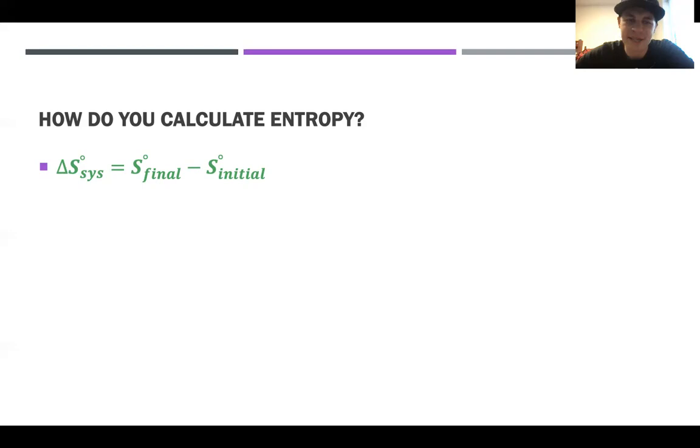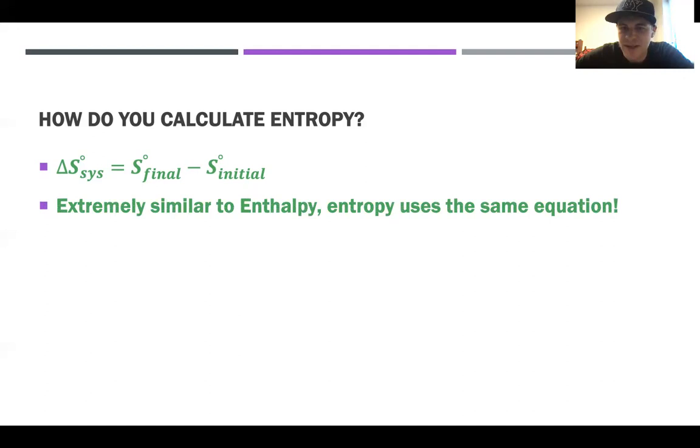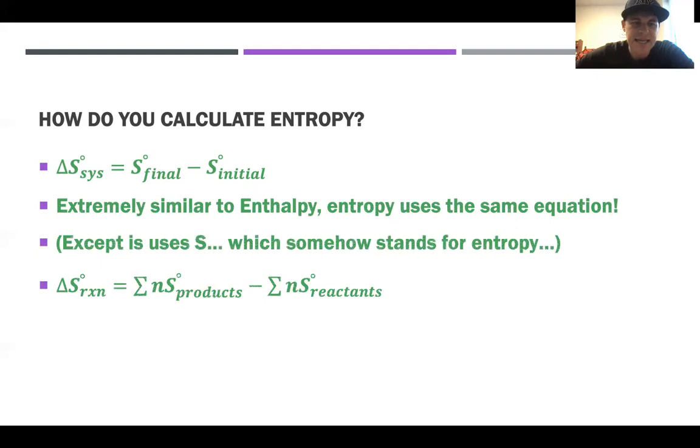The change in entropy is the entropy of the final minus entropy of the initial. And it's super simple, super similar to enthalpy. It uses the same equation. The only difference is that it uses an S which somehow stands for entropy. And there's no S in the word entropy, but somehow it stands for it, scientists are smart. You just got to trust what they were doing. But that same equation for finding the change in a reaction. So the Delta S or the Delta entropy of a reaction is going to be the products minus the reactants. And then whatever moles there are, you're going to multiply that in, but you're going to add together all of the products and subtract all of the reactants from that. So we'll go through some practice problems. You can pause it and run through it to make sure you got it. And then I'll walk through the answer after you've done that.